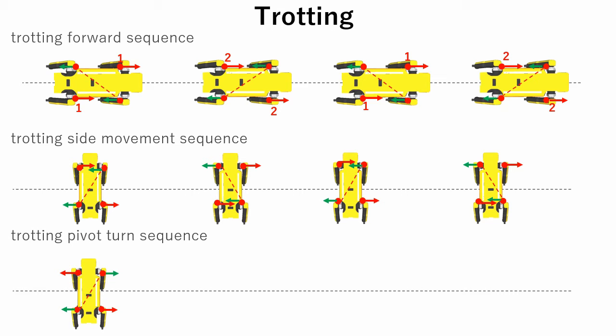For the pivot turn, we have a different situation. Here, two diagonal legs move in directions opposite to each other to create a momentum which rotates the robot.